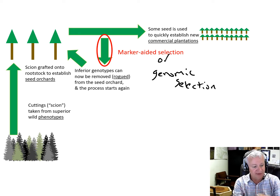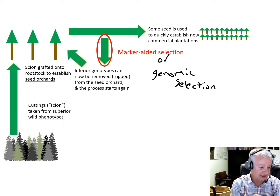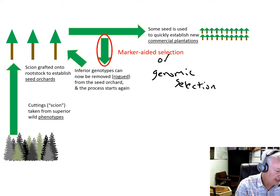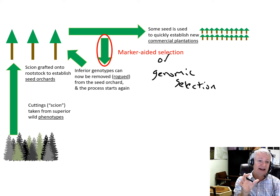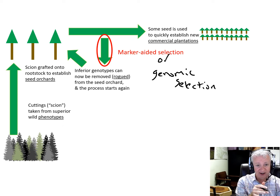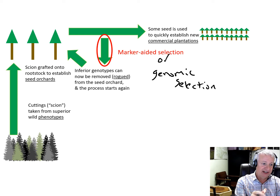For instance, the entire genome of loblolly pine has been sequenced, and that enables us to do marker-aided selection or genomic selection. You couldn't do this for species where we don't have that very deep, long information about the genome and those genetic populations. But in species where we do, we can use those tools to shortcut and shorten or eliminate the testing phase — basically going from 20 or 30 years to more like 10 to 20 years for a generation of tree improvement.